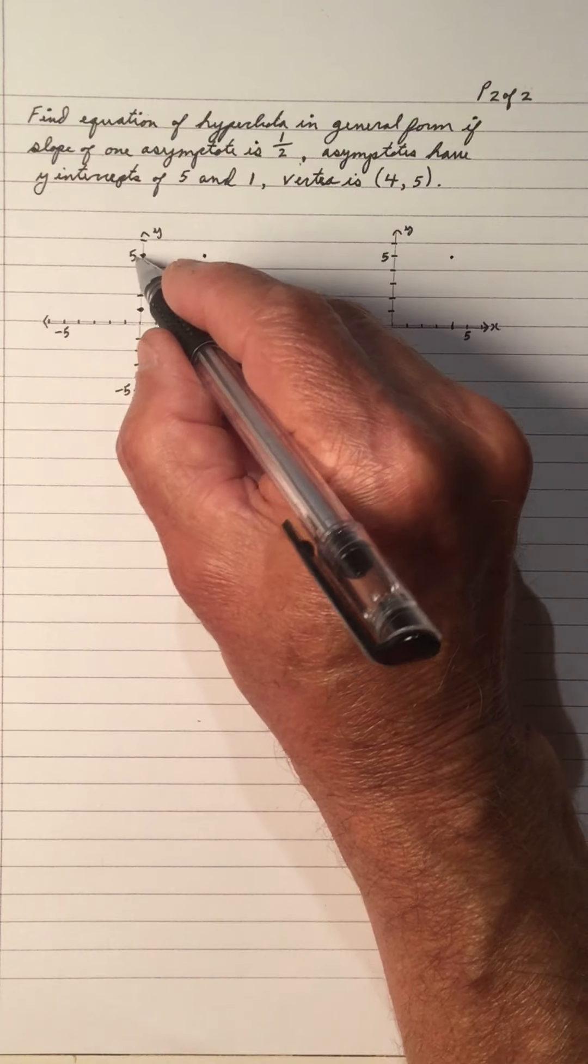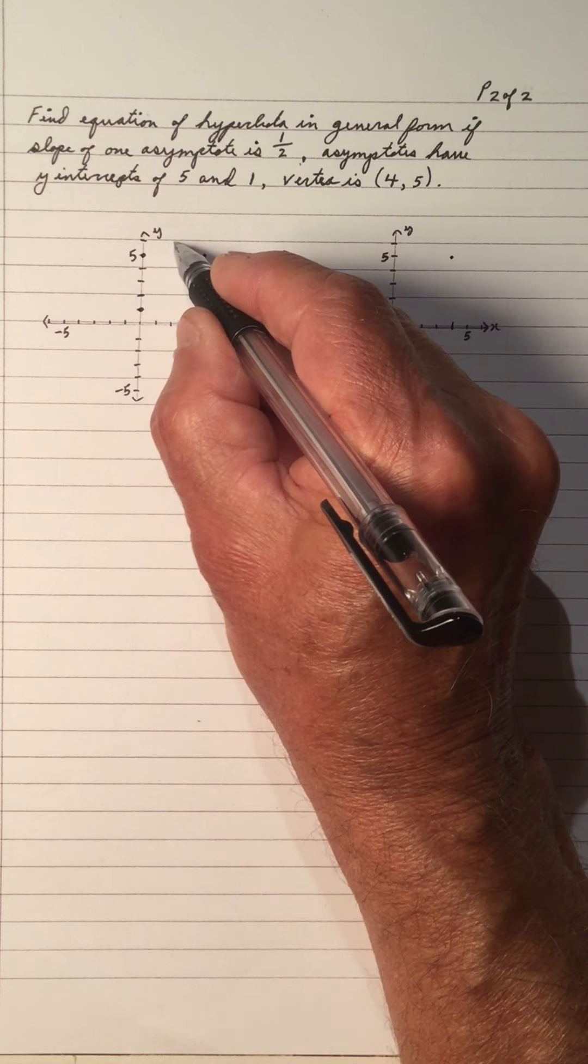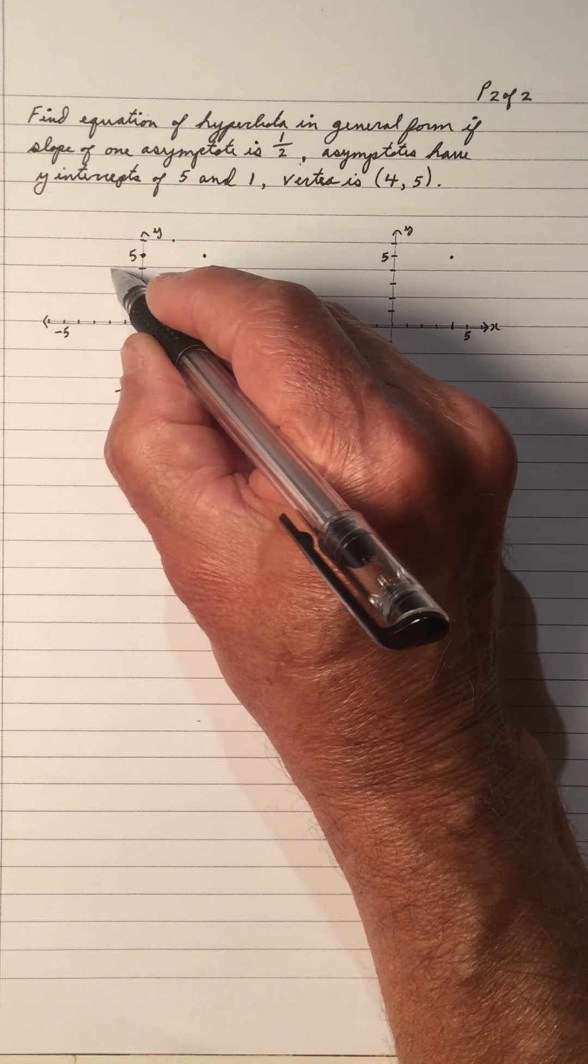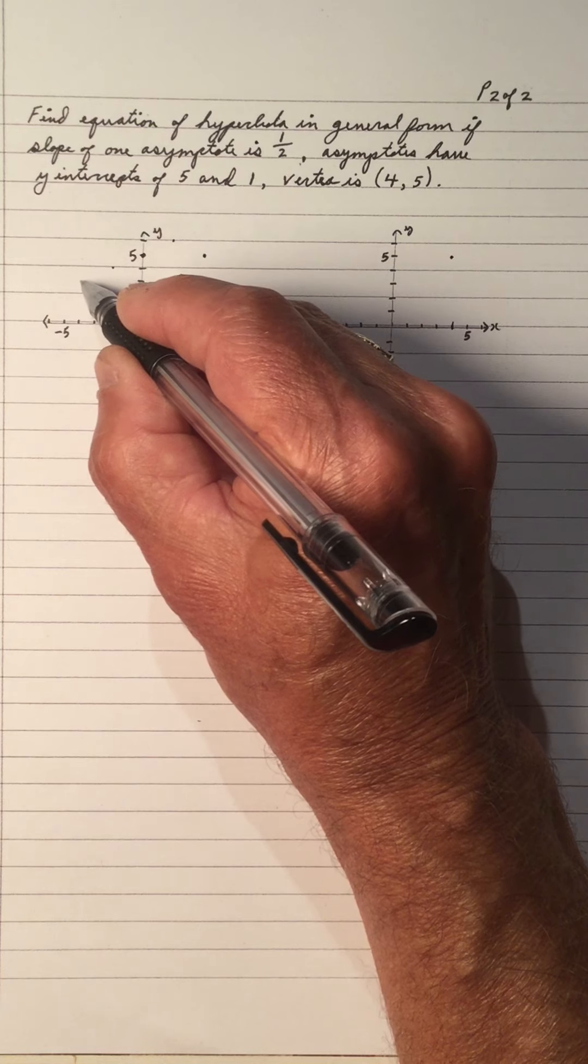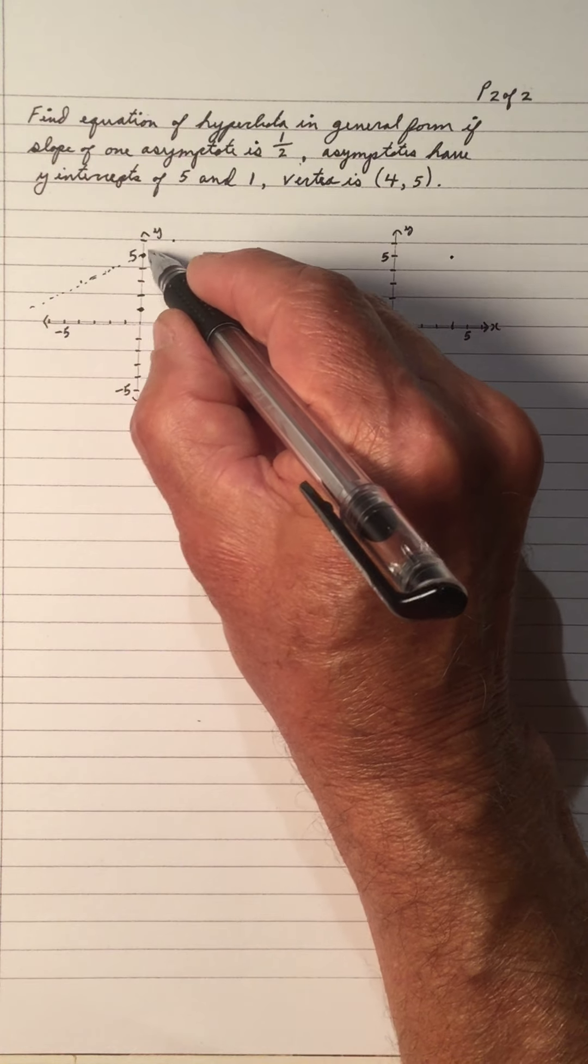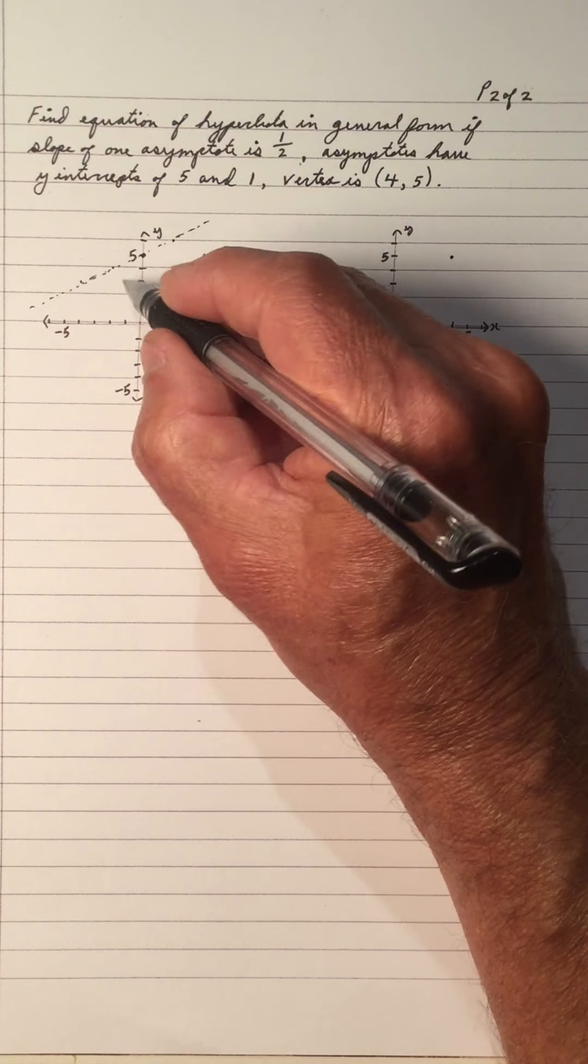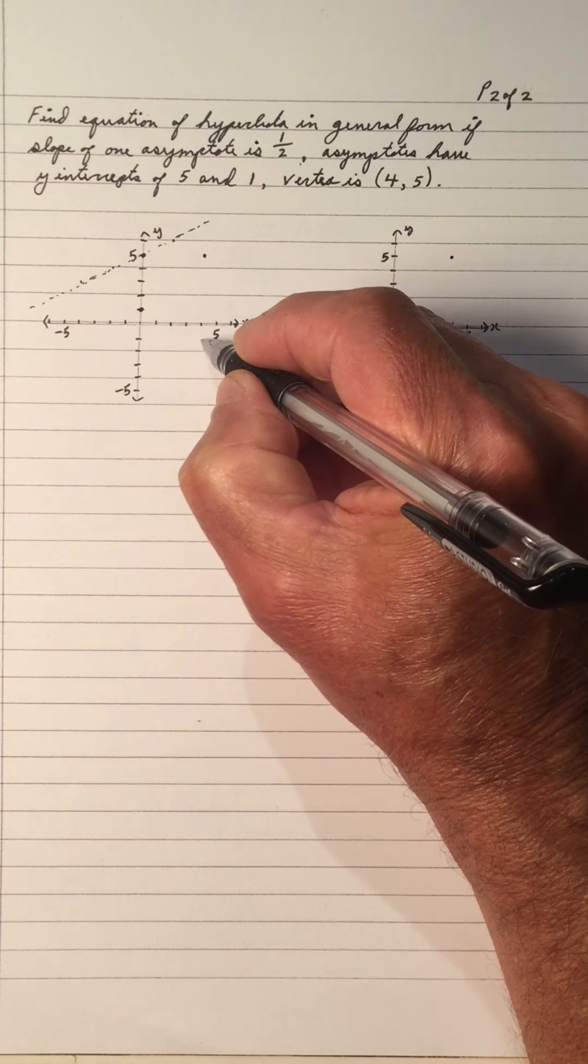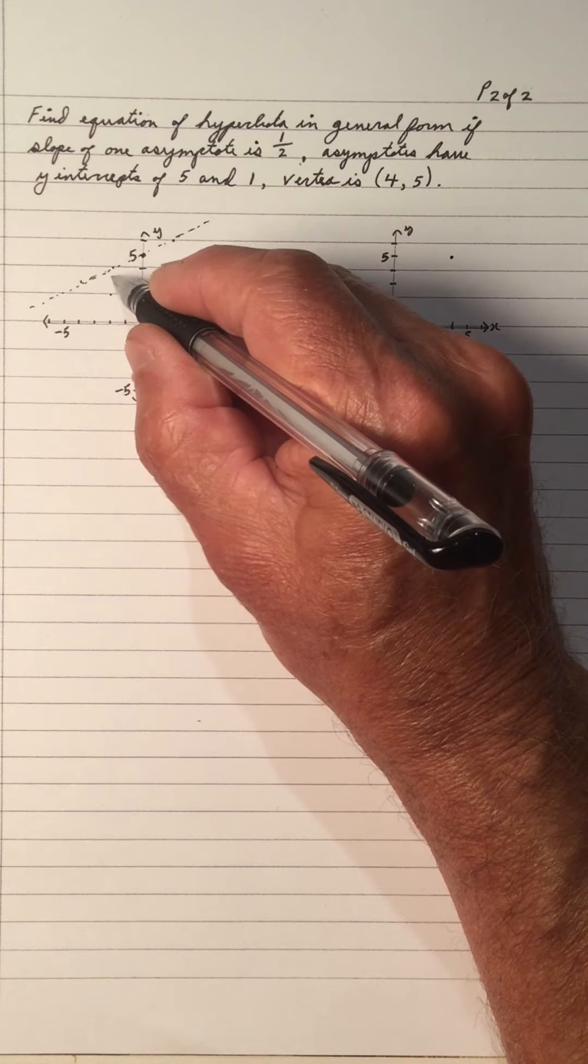So let's draw that information. We have 1 going through to 5. So let's pretend it's positive. So it's up 1, right 2. Or we go down 1, left 2. So this is the positive one. So it's going through 1, but it's negative. So that means it goes down 1, right 2. Or it can go up 1, left 2.